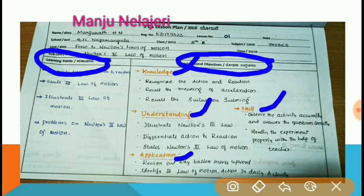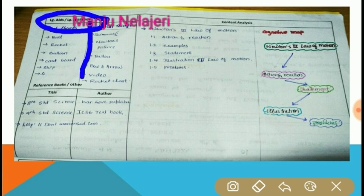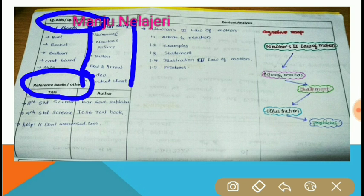In the learning points, the sectional objectives are written on the right side. Next, we write the learning heads or learning activities. Real things and pictorial things are written there, and also the reference books are listed.